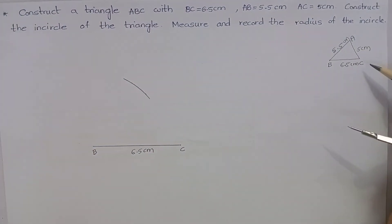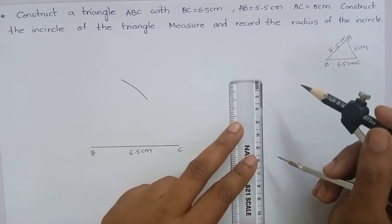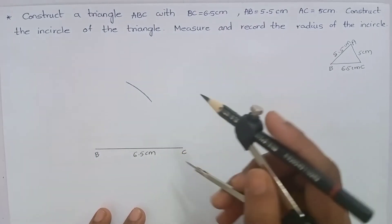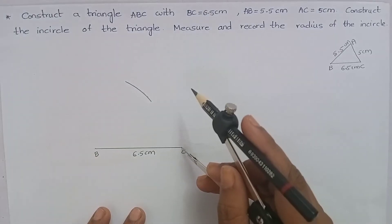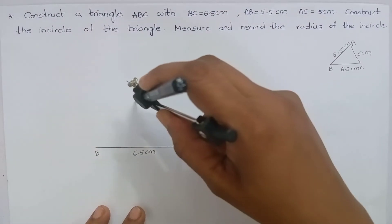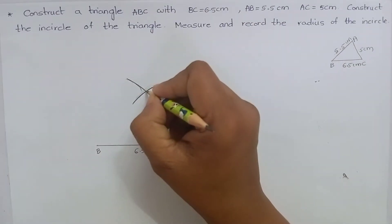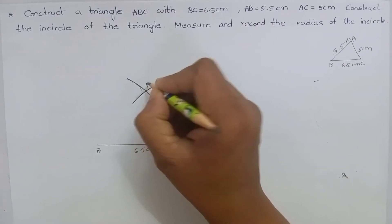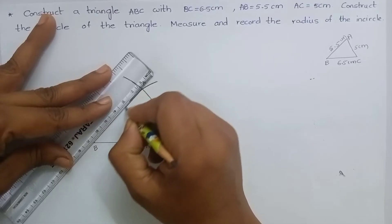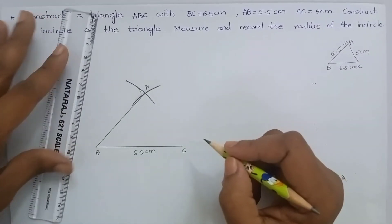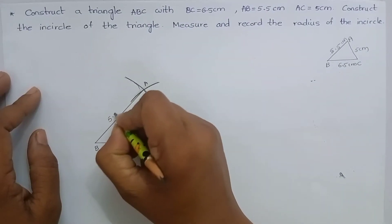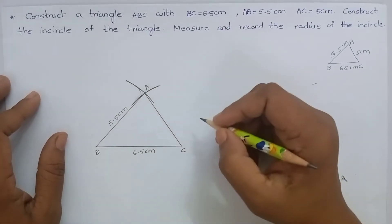AC is 5 cm. Measure 5 cm. Keep the compass at the point C and cut an arc. Name this point as A. Mark AB and AC. AB is 5.5 cm and AC is 5 cm.